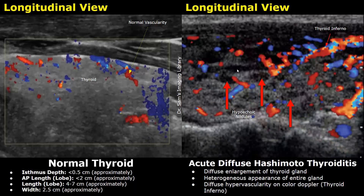This is another case showing hypervascularity, or thyroid inferno, in a case of Hashimoto thyroiditis. You can also see hypoechoic nodules and the gland appears enlarged.